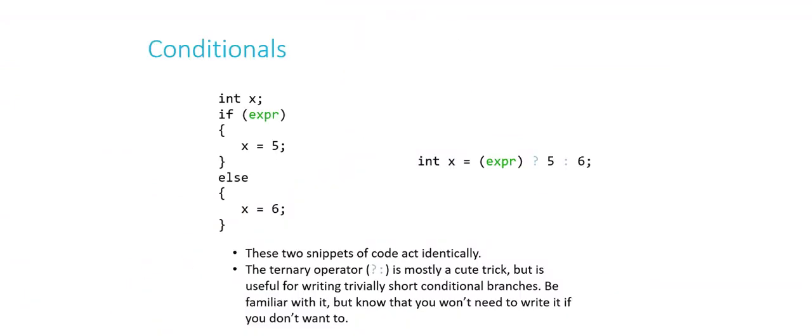You generally wouldn't use question mark colon if you had six lines of code between each set of curly braces. But if you're just making a quick decision, if you're going to do one thing or the other, and it's very simple, this might be an example of how to do it with question mark colon, the ternary operator. So int x equals expression question mark. The thing after the question mark is what x's value will be if expression is true. The thing after the colon is what x's value would be if the expression was false.